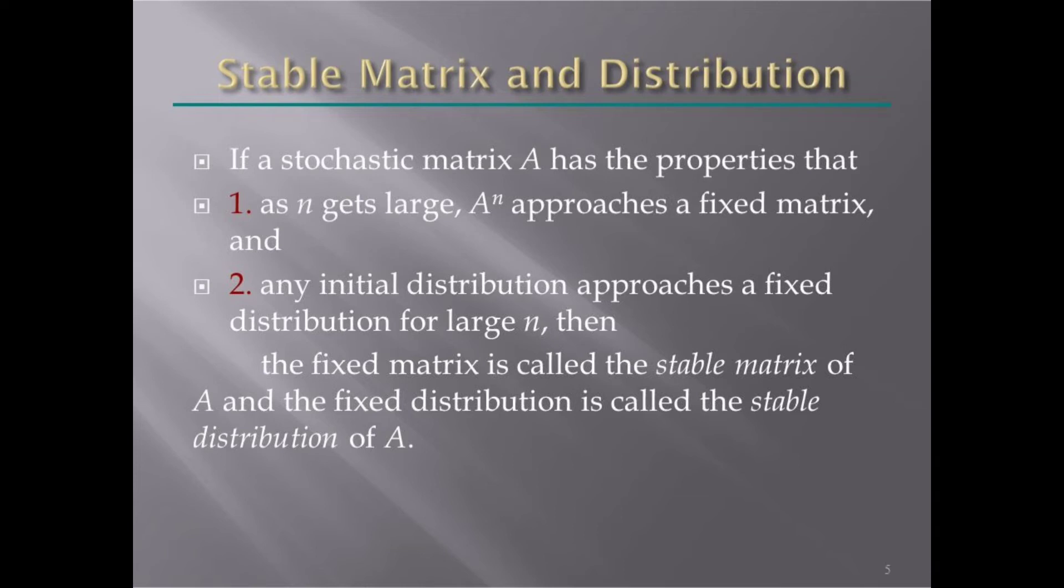Stable matrix and distribution. If a stochastic matrix A has the properties that as n gets large, A raised to n approaches a fixed matrix, and any initial distribution approaches a fixed distribution for large n.